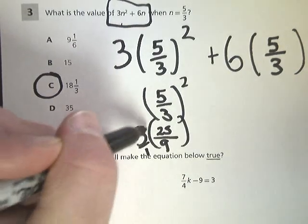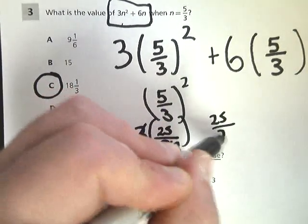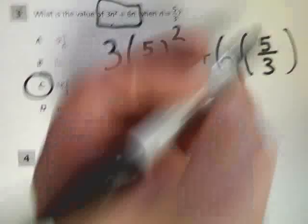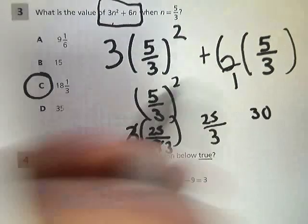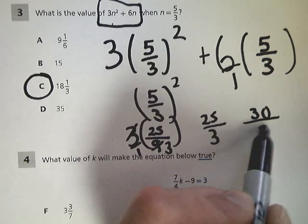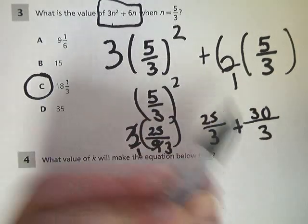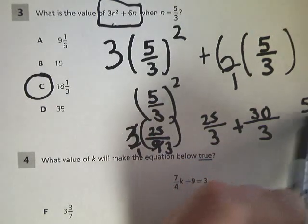This would be 3 over 1, so the 3's go away, so you're left with 25 over 3. And then I've got 6 times 5 thirds, where it would be 6 over 1, so 6 times 5 is 30 over 3 because I'm multiplying.